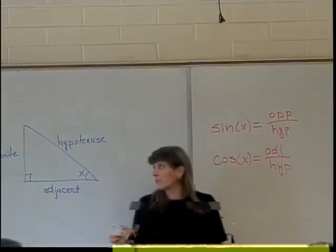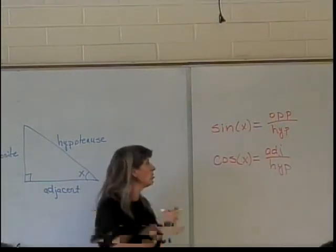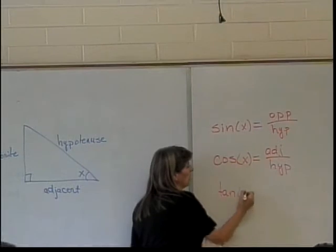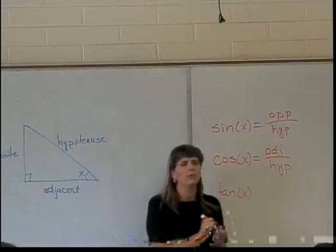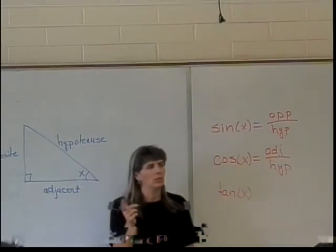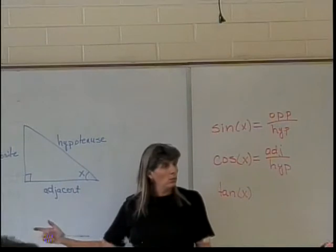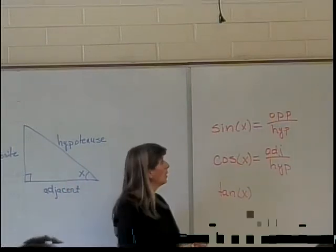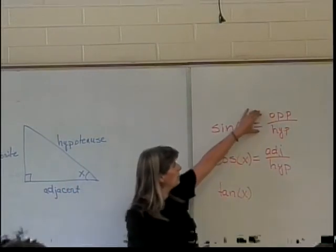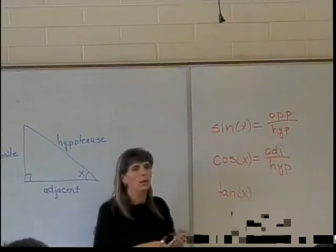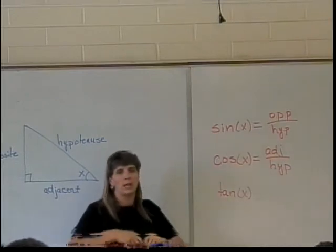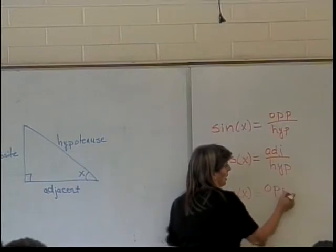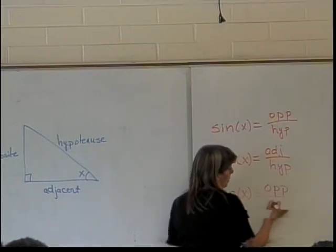We're going to define the tangent of X in terms of sides, but we really don't have to because we can use our existing definition of tangent, which was sine of X over cosine of X. If we take sine of X and put it over cosine of X, what are we left with in terms of sides? Opposite on top and adjacent on the bottom.